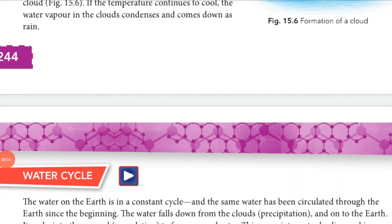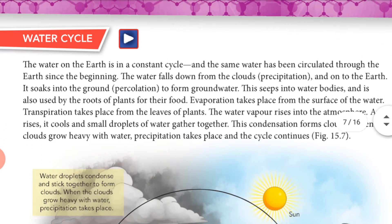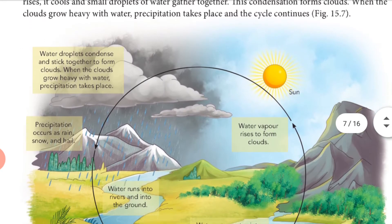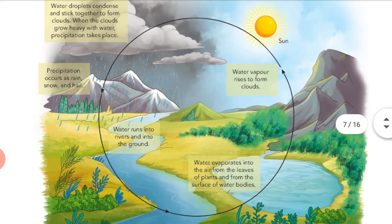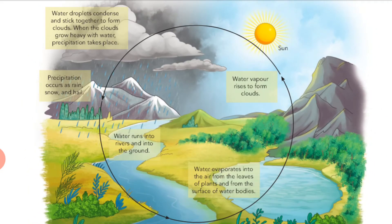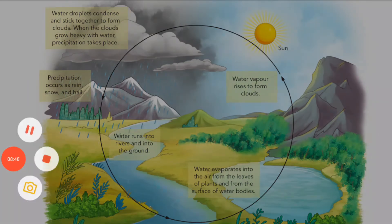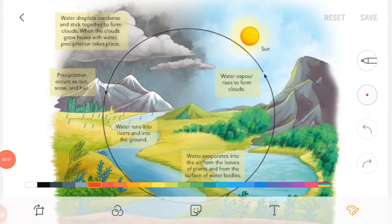Now let's discuss the water cycle. Look at this diagram. On the earth's surface, the sources of water include rivers, lakes, ponds, seas, and oceans — these are all sources of water.